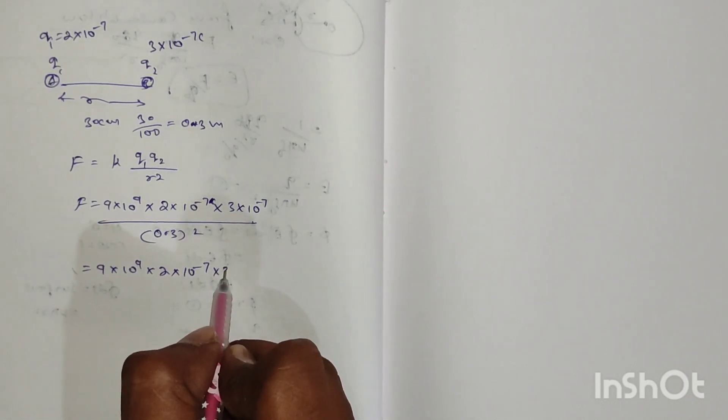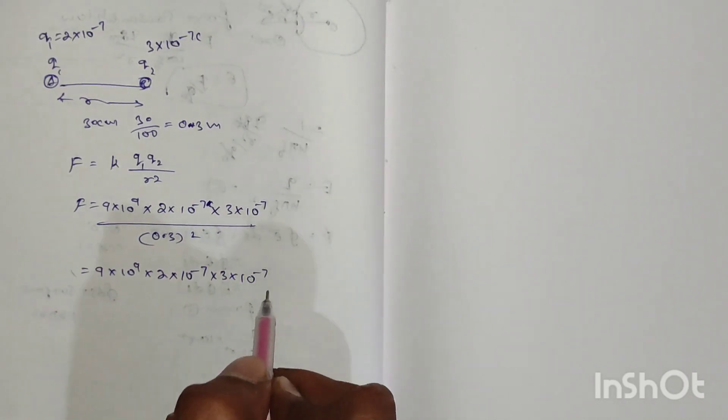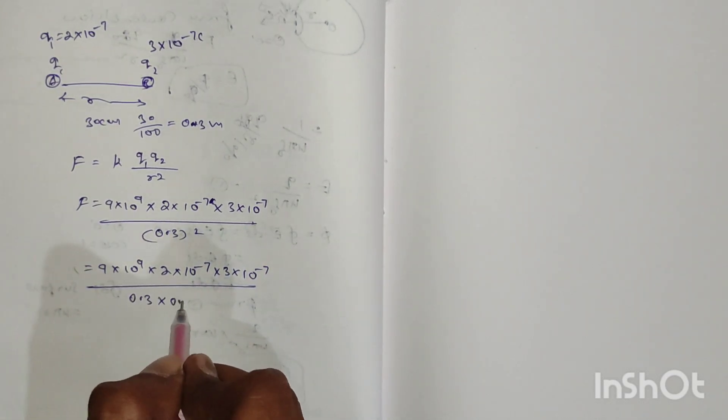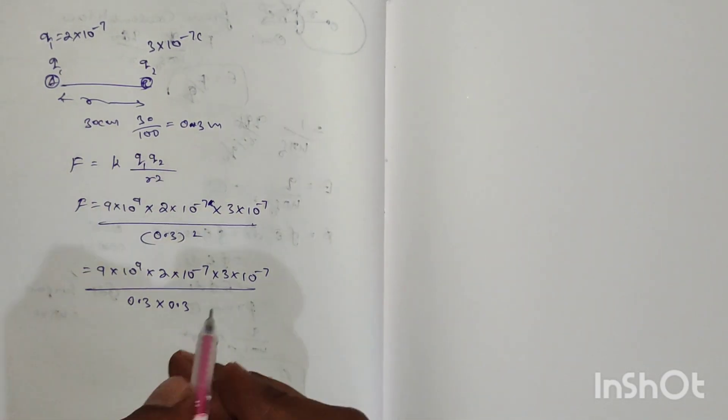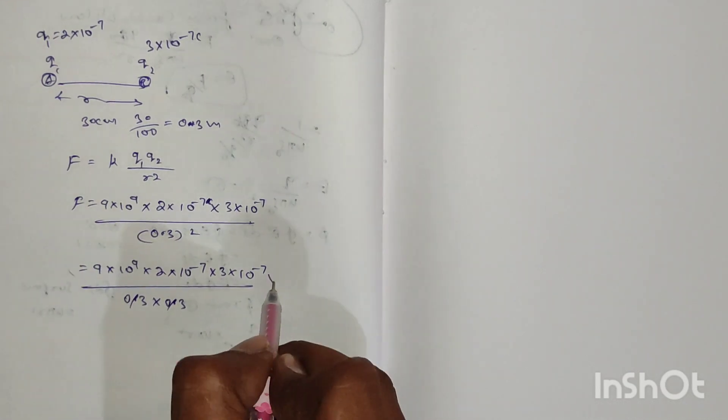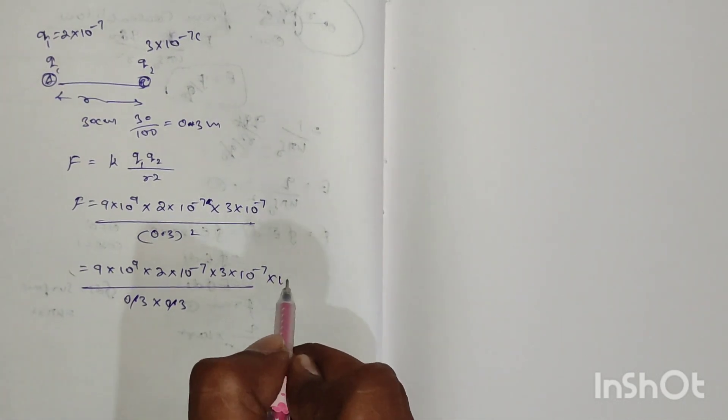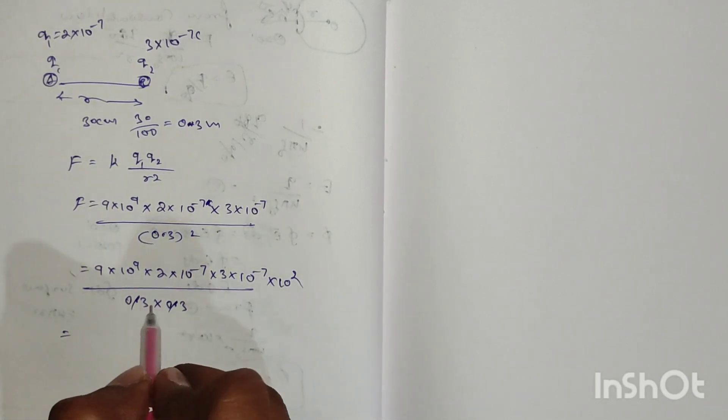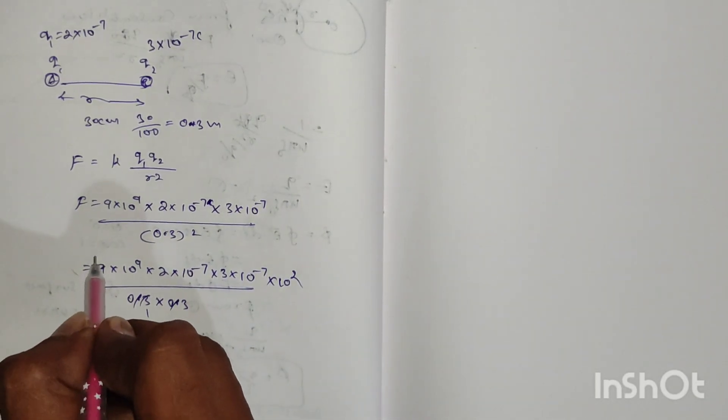F equals 9×10^9 × 2×10^-7 × 3×10^-7 divided by 0.3 × 0.3. Cancel these decimals to get 10^2. Now, 3×3 equals 9.